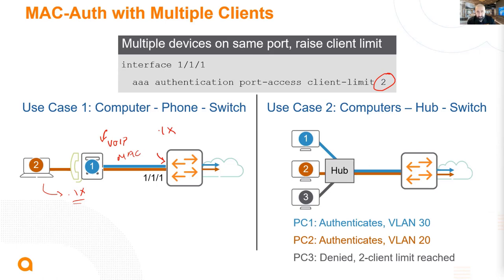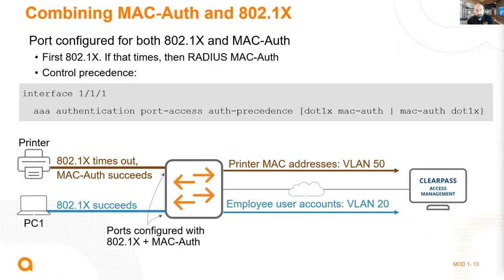Another use case is a switch connecting to a hub or device that enables multiple clients simultaneously. Because the client limit was increased to two, only the first two clients will be authenticated on a first-come, first-served basis. The first client is assigned to VLAN 30 per policy, the second is authenticated, and the third is denied with an 'exceeding the limit' message. If the limit was three, the third would also be attempted.